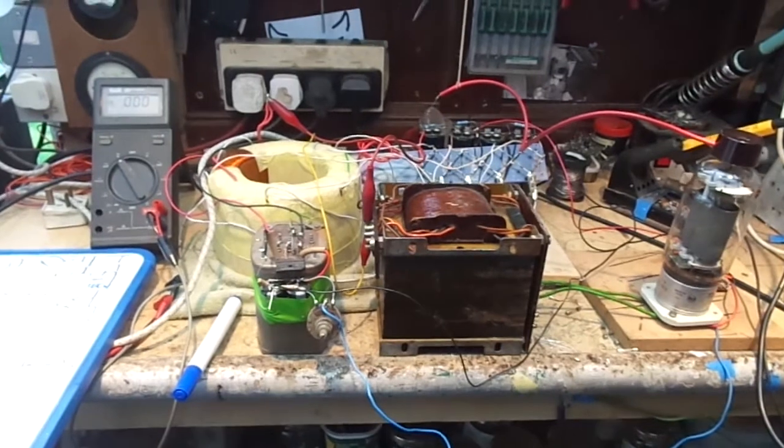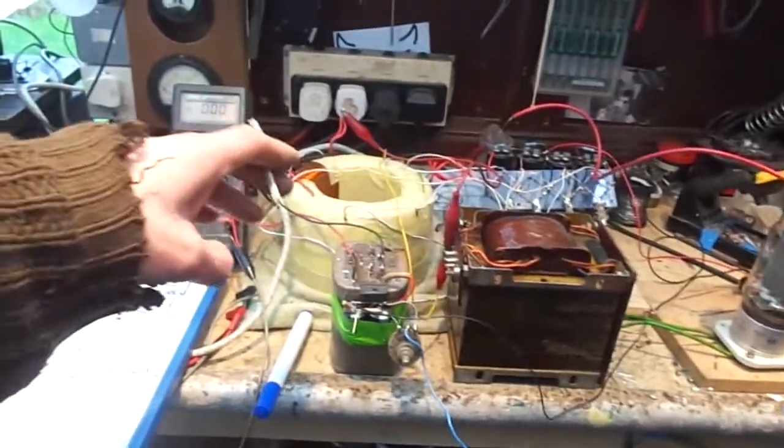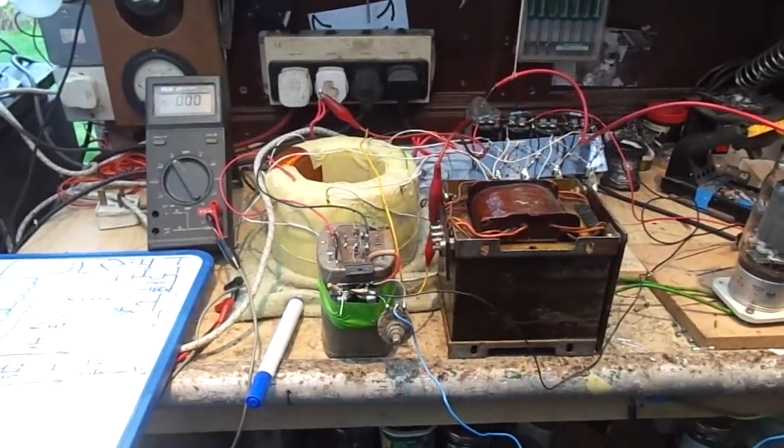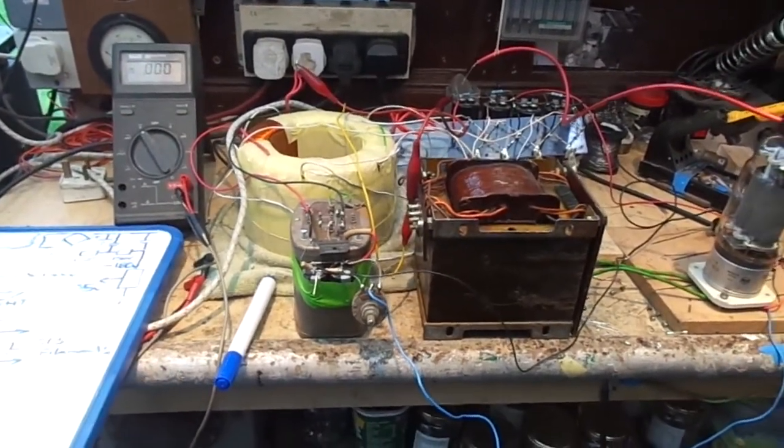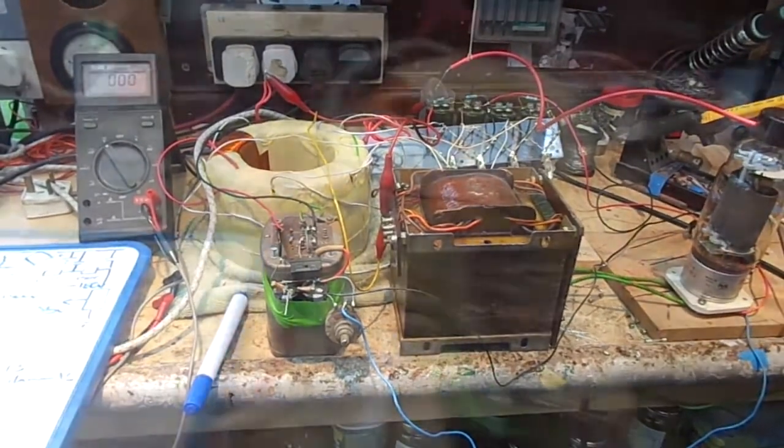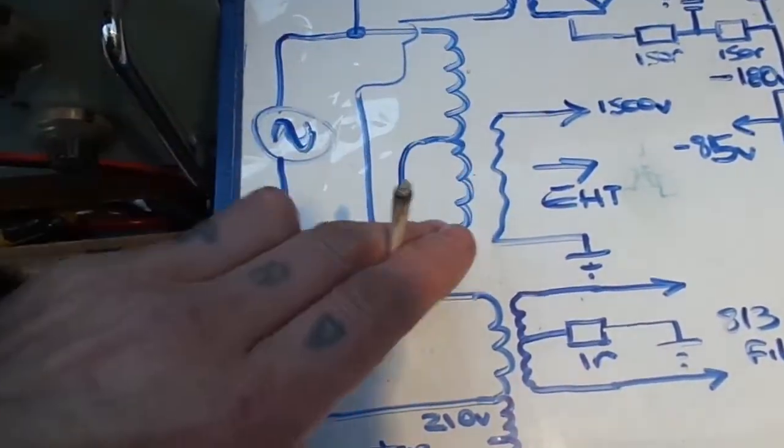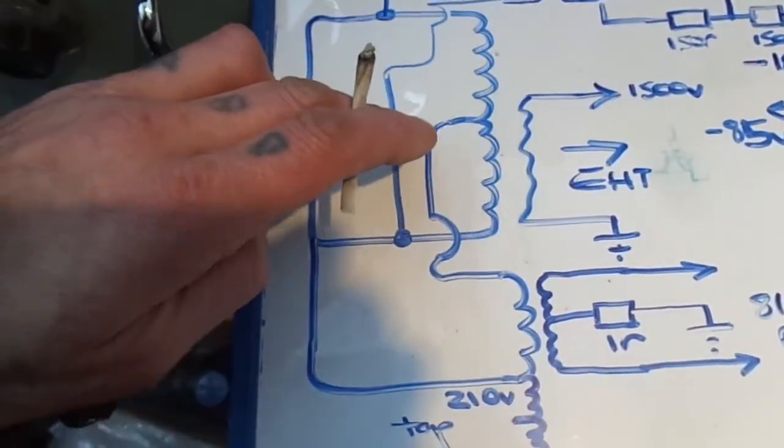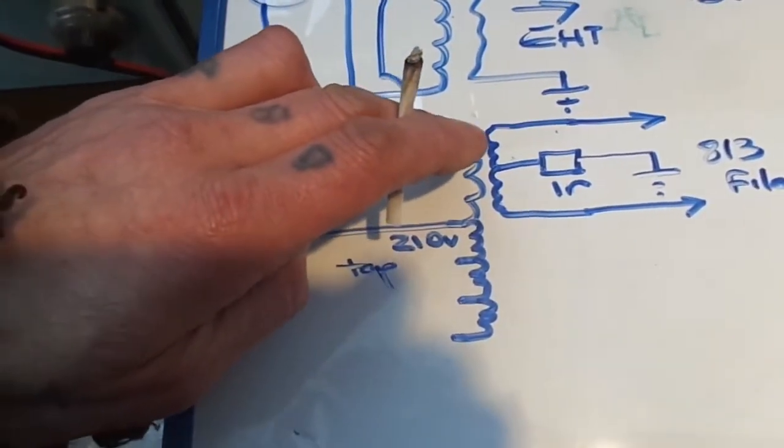Right, well some hours later after a bit of work and a bit of head scratching, I've got a test setup to test an 813 in situ, as it were, with the old big transformer. Just for a bit of fun really, and just to give us a bit of impetus to wind the other, yeah, it's about a thousand turns anyway. So it looks complicated, it isn't. Here's the doings here.